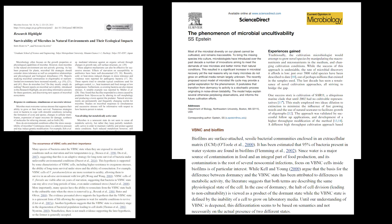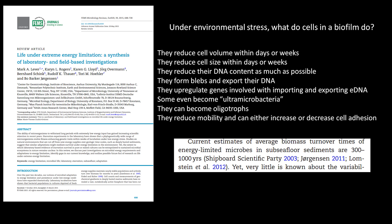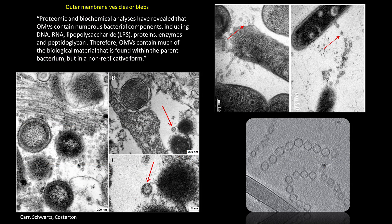Under environmental stress, what do cells in a biofilm do? They reduce their size and volume almost immediately. They reduce their DNA content as much as possible. They reduce their genome sizes. They form blebs and export their DNA. They upregulate genes involved in importing and exporting DNA. Some even become ultra-microbacteria. They can become oligotrophs and live on practically nothing. They reduce motility and can either increase or decrease cell adhesion. Blebbing may also rid the cell of non-essential DNA and is a very common finding in the case we did with Rick Schwartz's case.